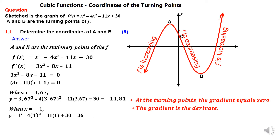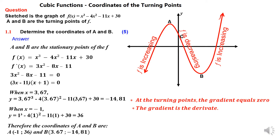Those are the two x-values: the first bracket gives x = 3.67 and the second bracket gives x = -1. My next step is to calculate the corresponding y-values by substituting each x-value back into the equation of f. When x = -1, what is y? When x = 3.67, what is y? That calculation gives us the coordinates of the turning points.